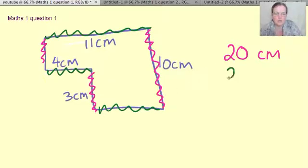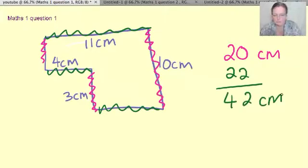If this is 11 then this plus this is also 11, so 11 and 11 equals 22. So the perimeter, the area all the way around the edge, is 42 centimeters.